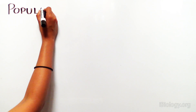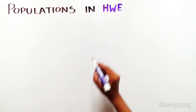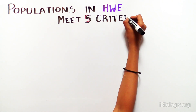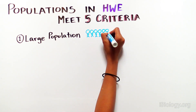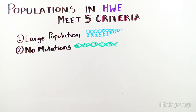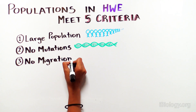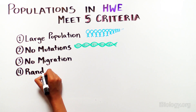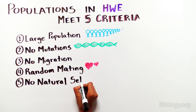For a population to be in Hardy-Weinberg equilibrium — so for the allele frequencies to not change over time — there are five criteria that must be met. These are: number one, the population must be large; number two, no mutations occur; number three, no migration into and out of the population, also called gene flow; number four, mating must be random; and number five, no natural selection can occur.